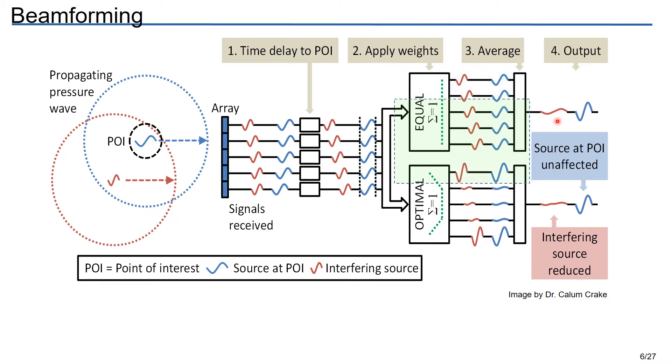However, if we optimize the array weights, that is how we amplify each of the array signals before combining them, and we do this every time we get new data, these so-called adaptive beamformers will give us again a pretty good representation of the signal at the point of interest, but with much better source suppression of the interferer.